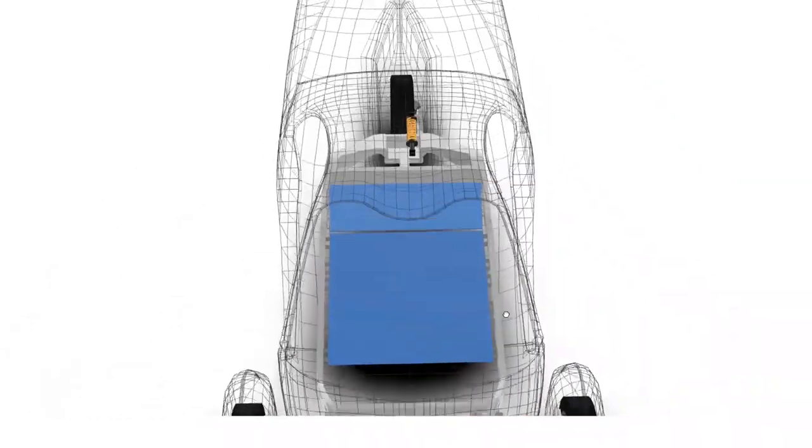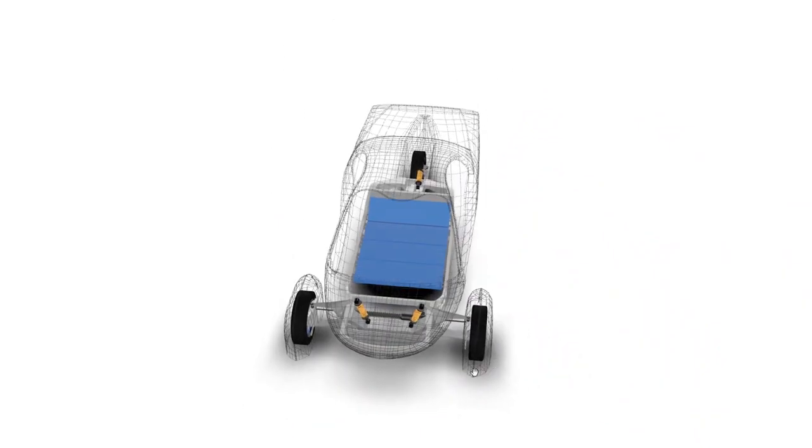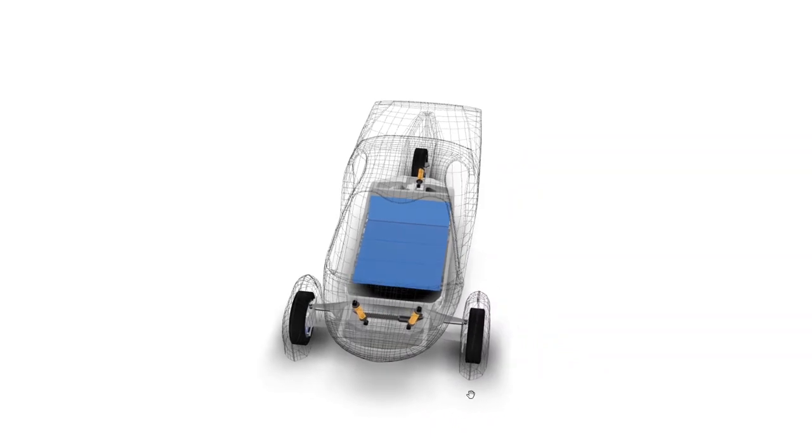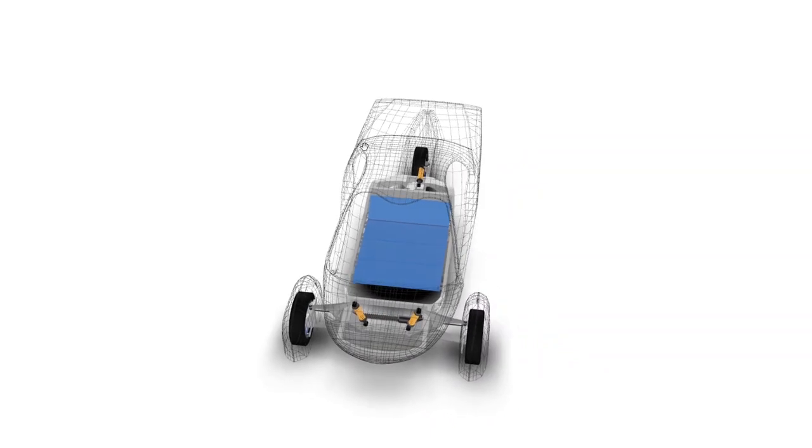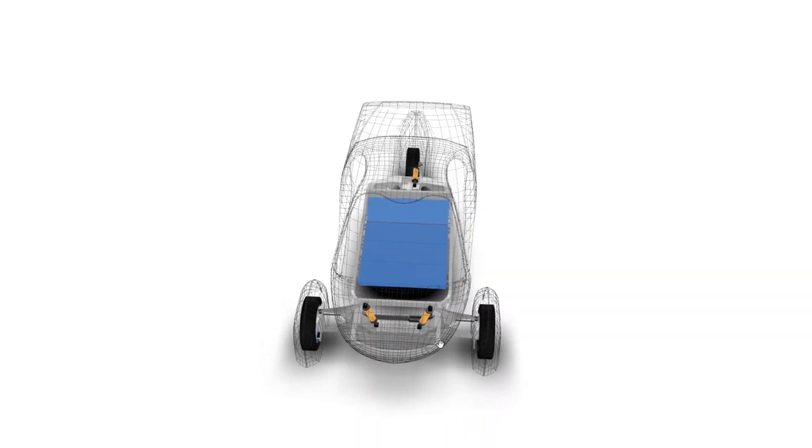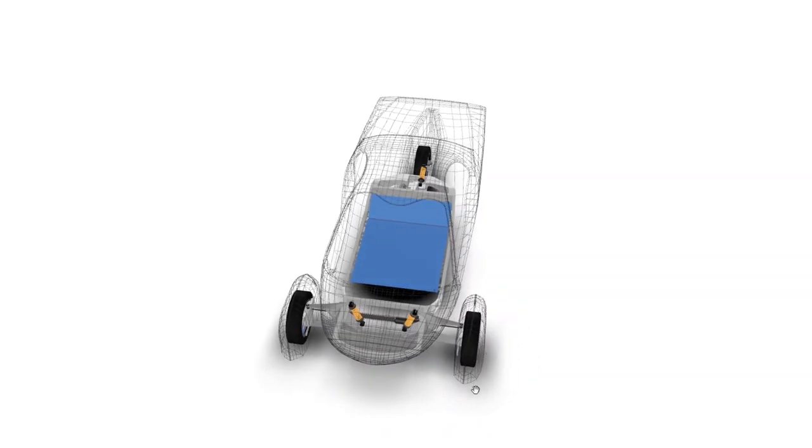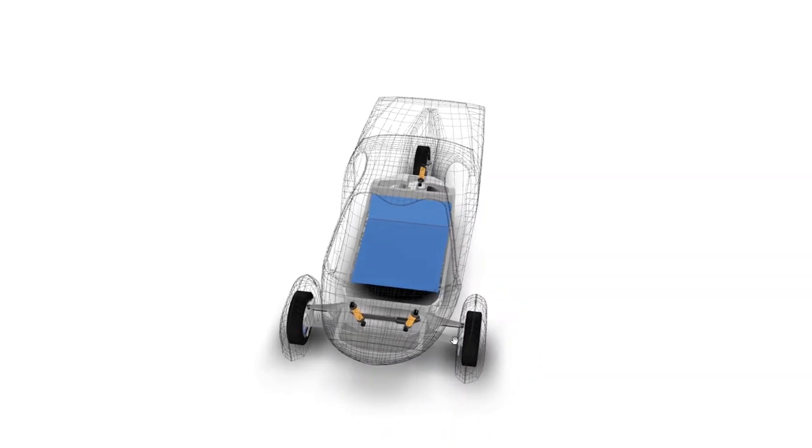One thing we were thinking about is if you did a small frontal offset crash test you would hit - do they base it on the width of the passenger compartment, in which case the frontal offset would hit here? Or do they base it on the total width of the vehicle, in which case the frontal offset would hit about here?